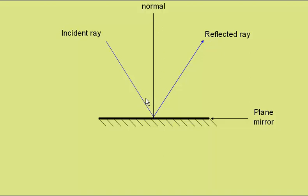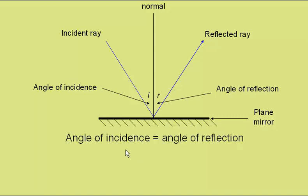This angle here we then call the angle of incidence, I, and this is R, the angle of reflection. Whatever the angle of incidence, we find that the angle of reflection is the same. So angle of incidence always equals angle of reflection. Or in symbols, I equals R. This is known as the law of reflection.